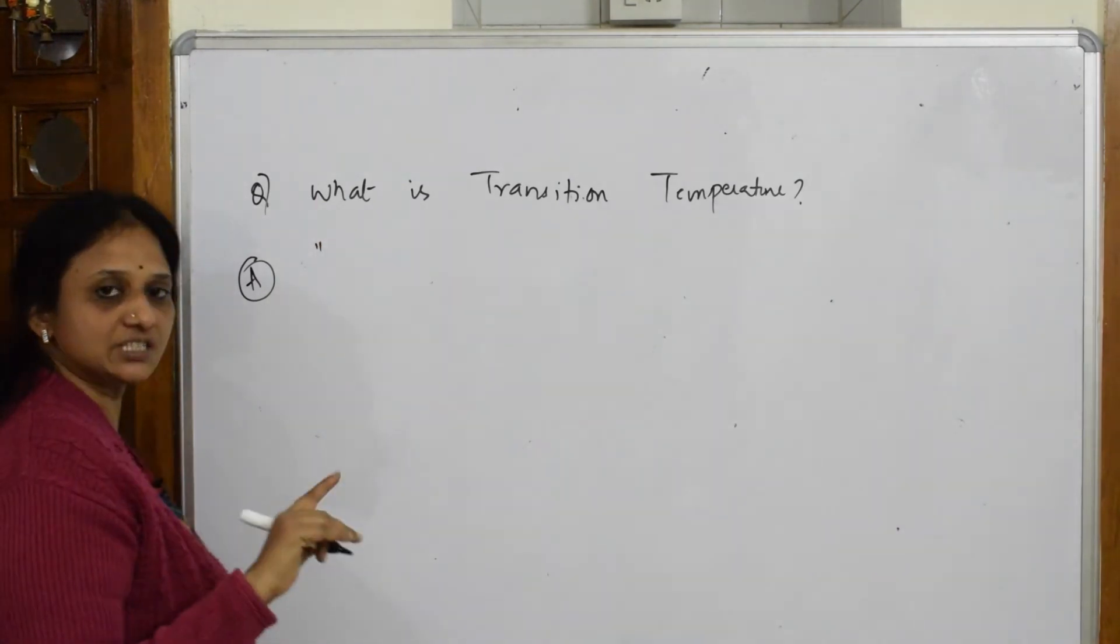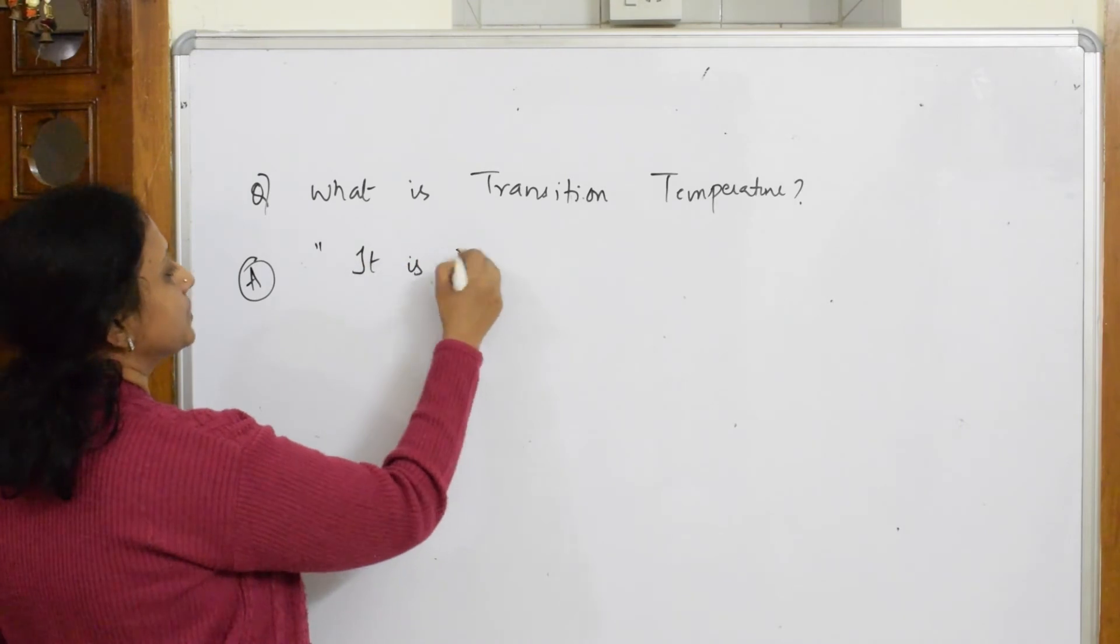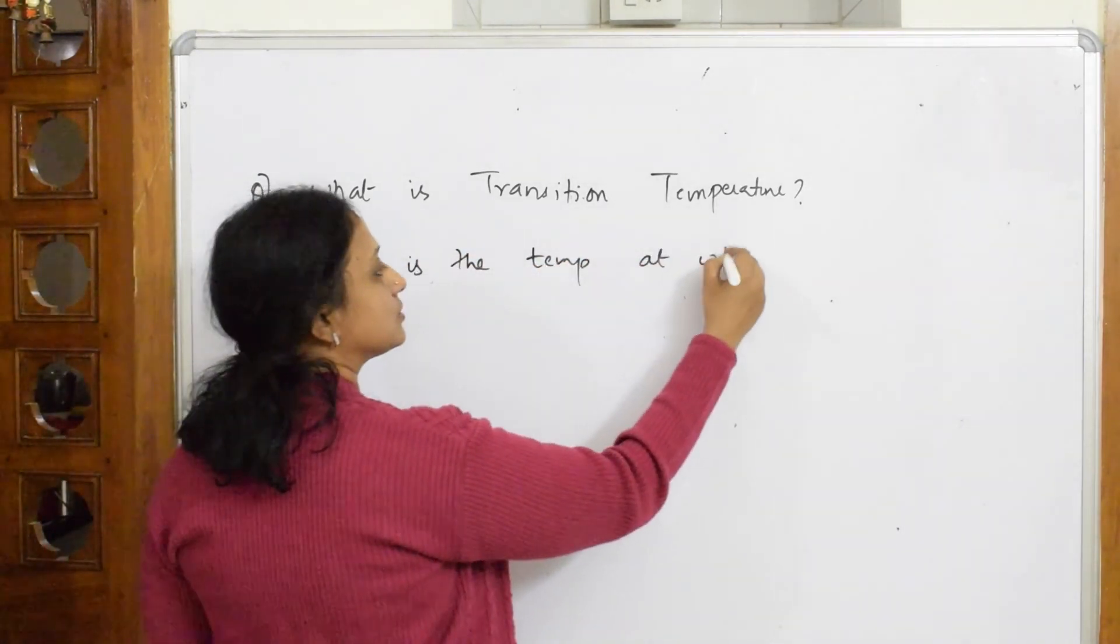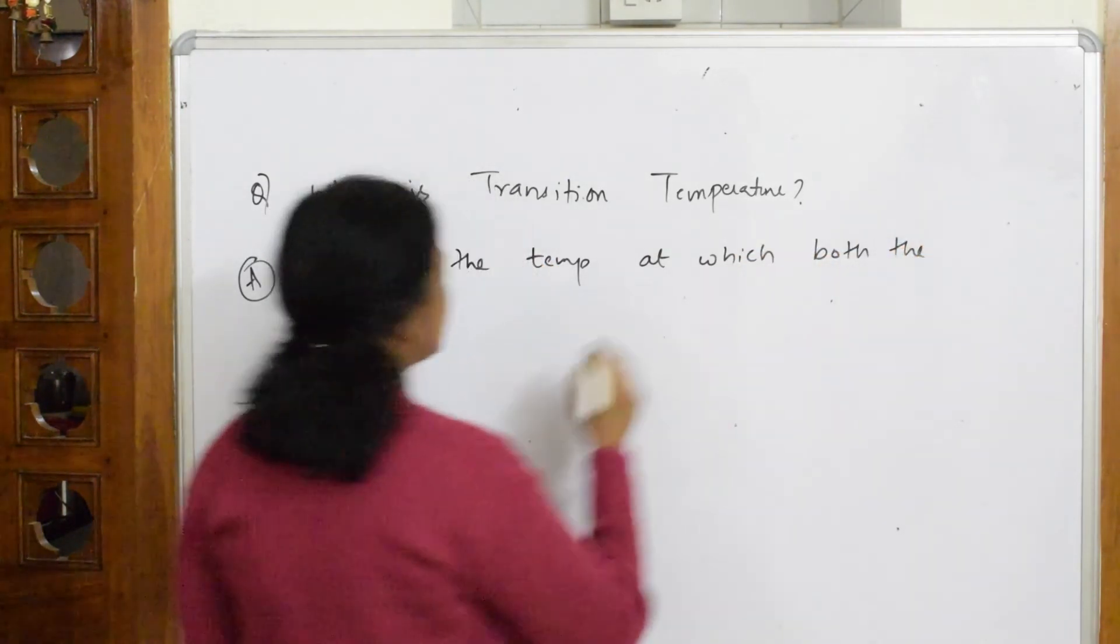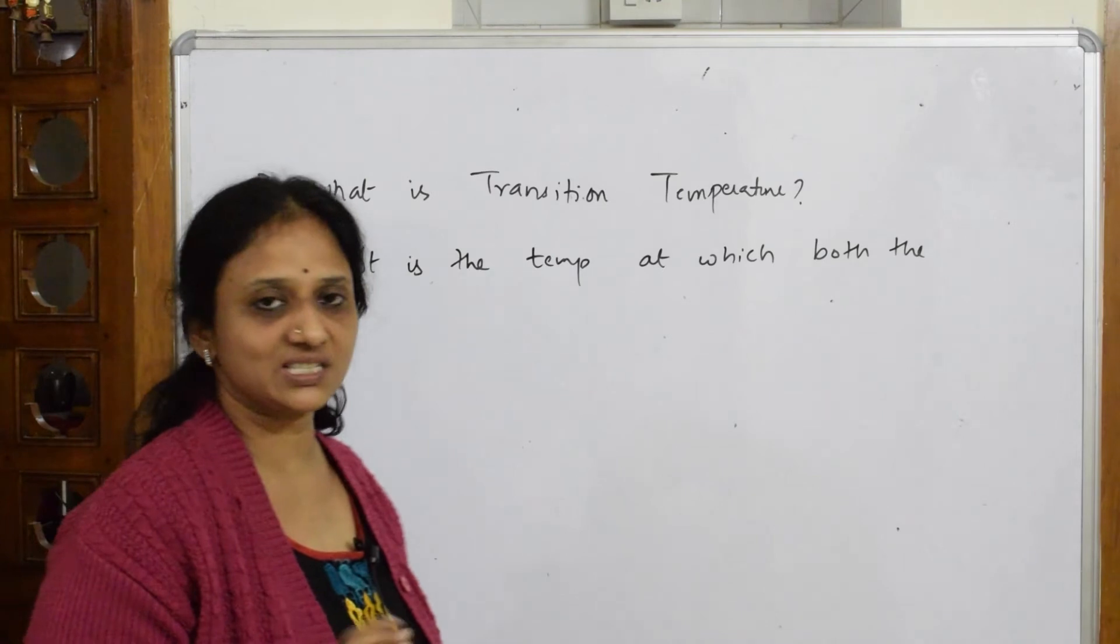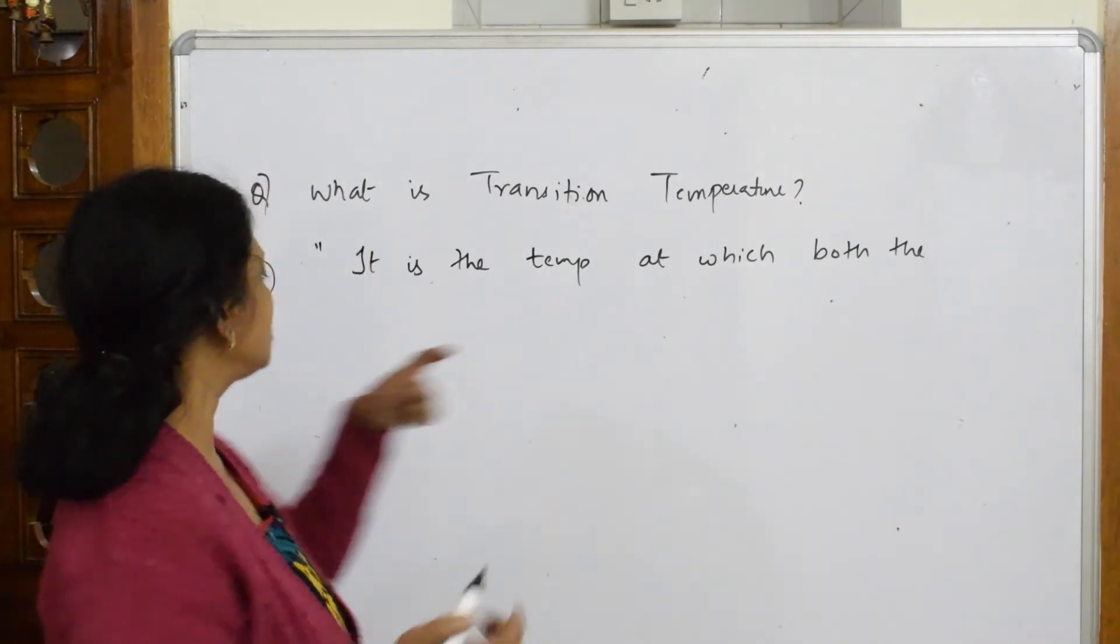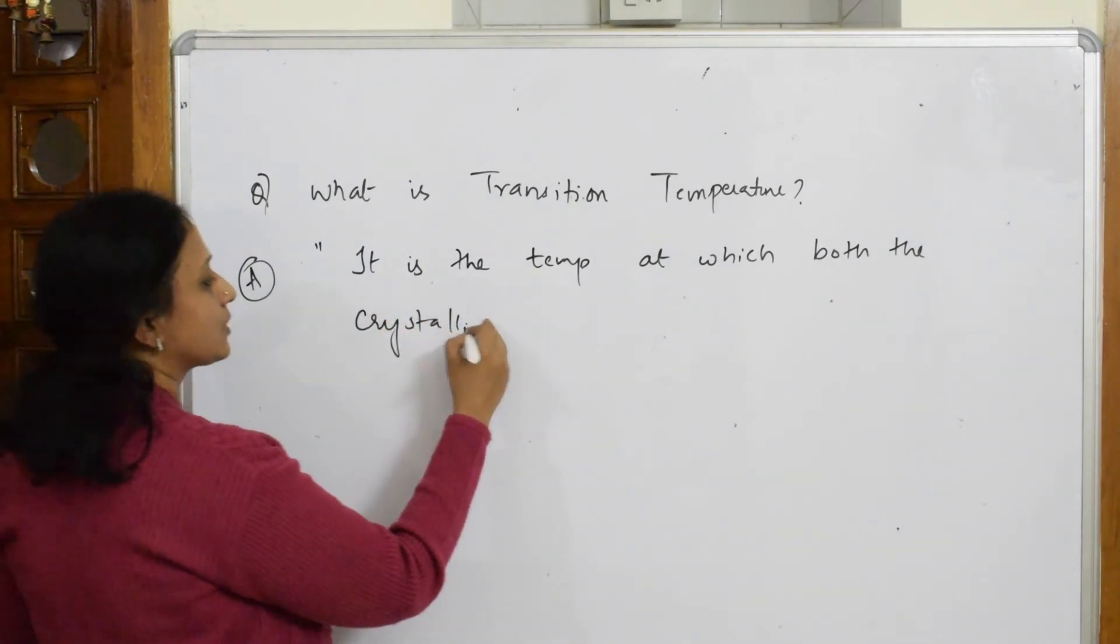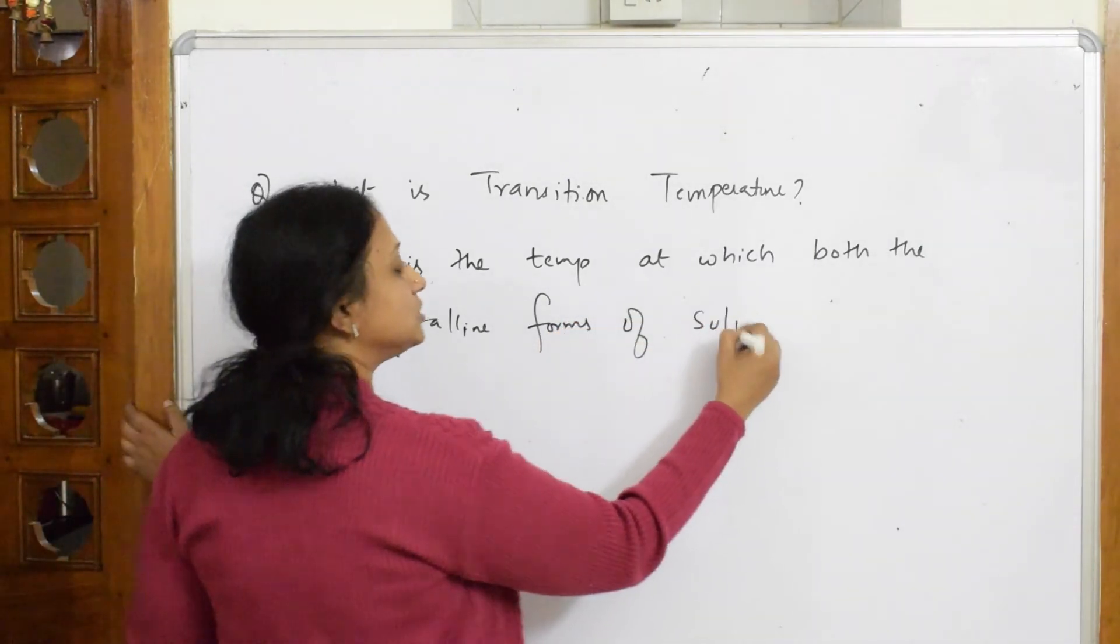Transition temperature is the temperature - start your answer like that. It is a temperature at which both the crystalline forms, one of the two crystalline forms, one is alpha sulfur and beta sulfur, nothing but the rhombic sulfur and the monoclinic sulfur.